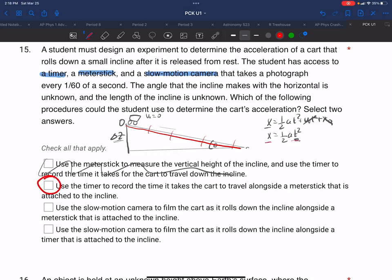The next one: use the slow motion camera to film the car as it rolls down the incline alongside a meter stick. So we have the meter stick in place and now we're going to film it. And we know each frame is 1/60th of a second. So this is just like video analysis in Pivot or another video analysis program. So it looks like that's the right answer.